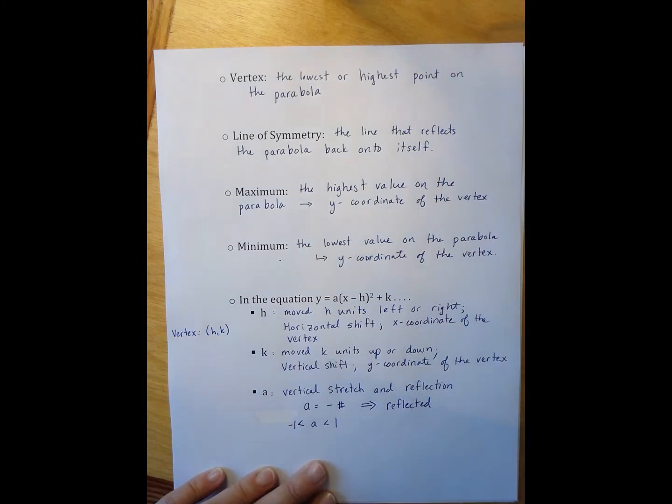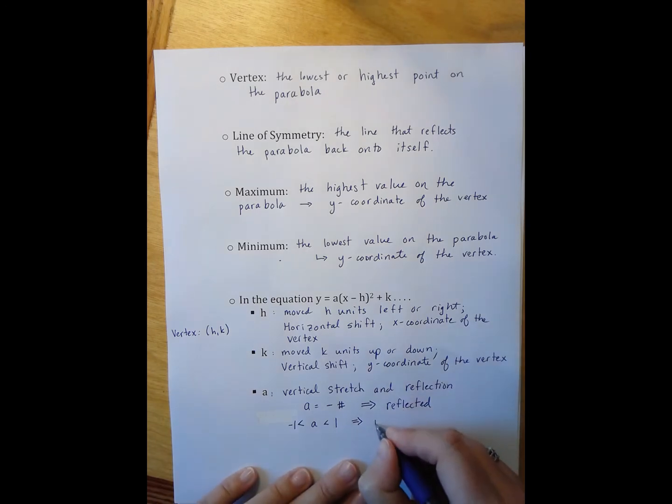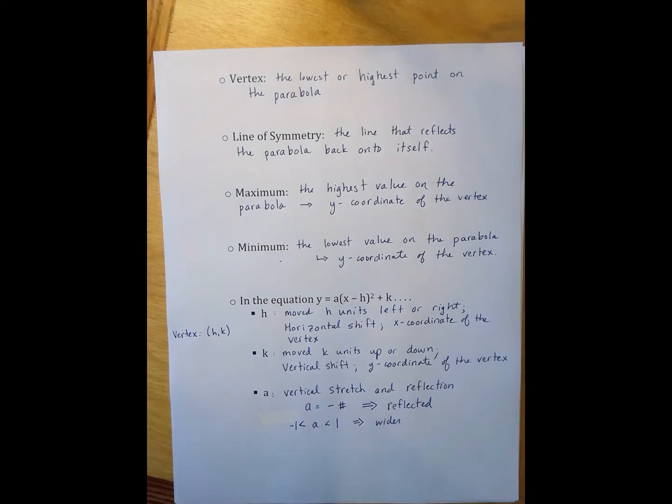When a is between negative one and one, this makes our function wider in appearance. So our u shape, instead of looking skinny, actually starts to look fatter and fatter.